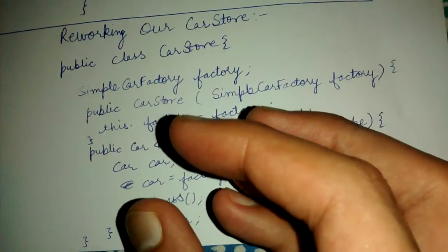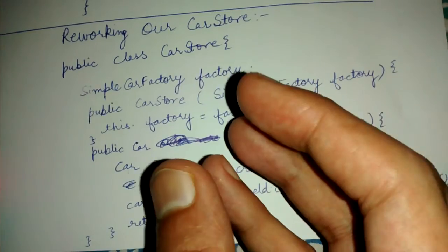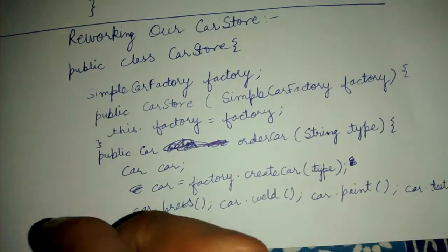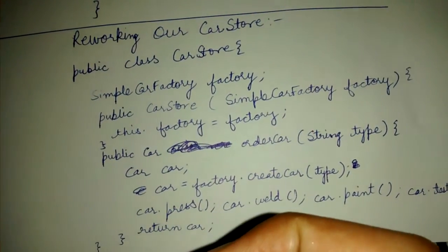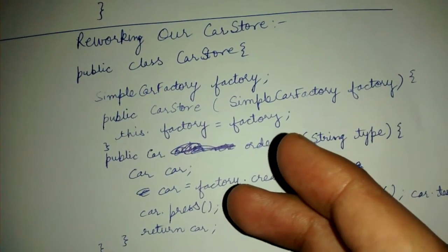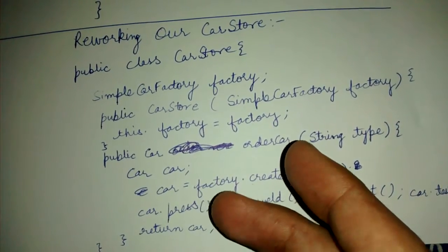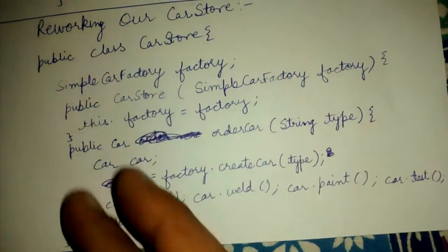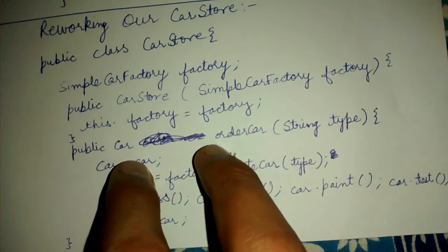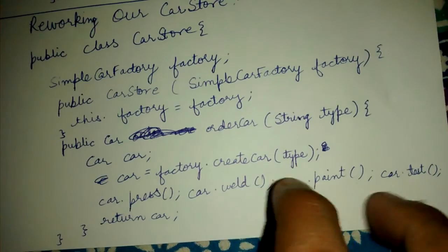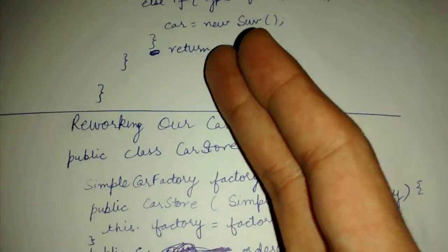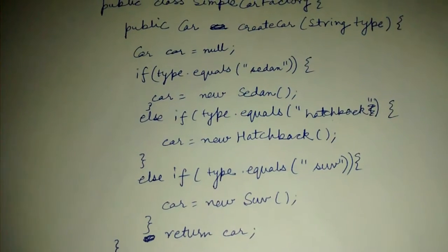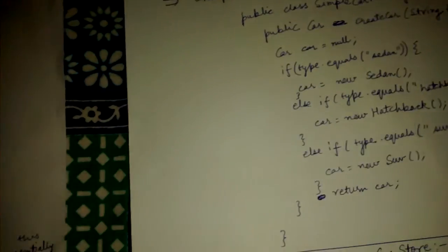This is, in other words, as we have seen in Interface Segregation Principle, when a single interface becomes bloated with a lot of concerns, we divide it into two interfaces. Basically the same idea we are having here. When this business class is doing two things - creating the objects as well as performing actions on them - we can delegate the creating the objects part to a new class, which is the SimpleFactory class.